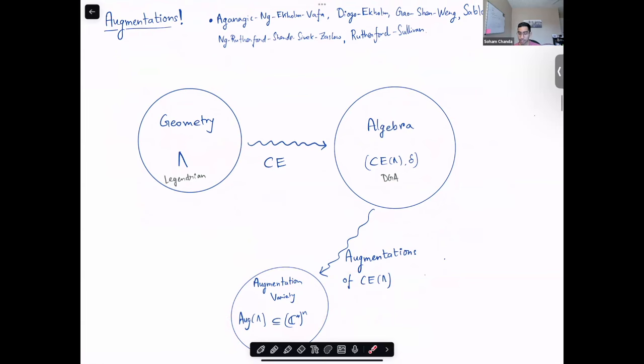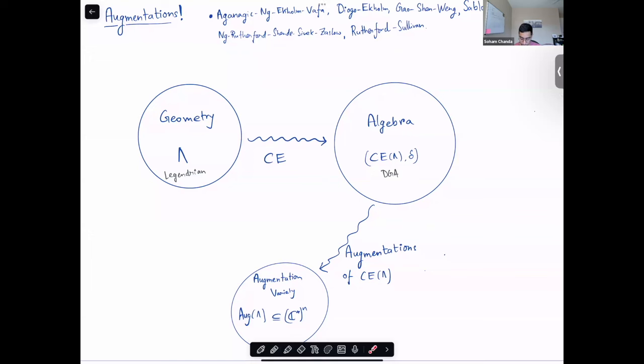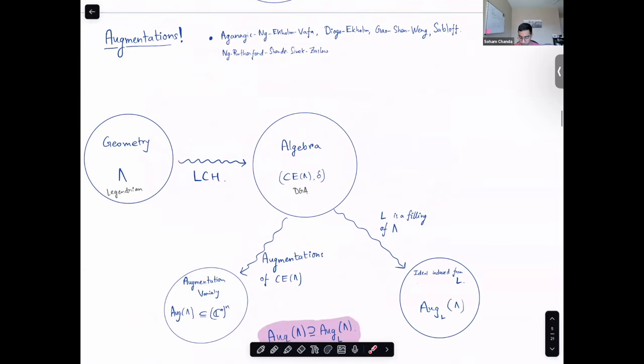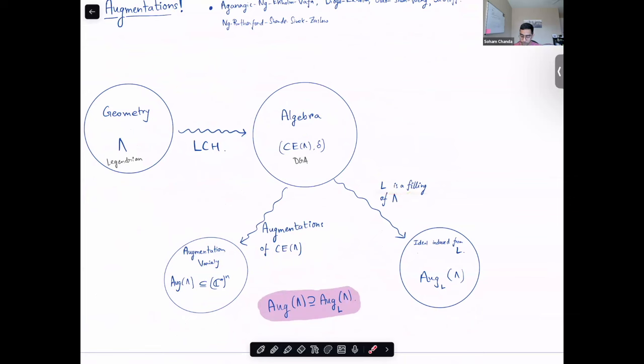Of course, this can come at a cost of losing some information, but since augmentation variety, as the name suggests, comes from augmentations of this DGA, you retain an important information of the geometry of the Legendrian, which is the Lagrangian fillings. Let's say you have a Lagrangian filling L of lambda; that would cut out a specific sub-variety of the augmentation variety. Thus, any filling would induce a sub-variety of the total augmentation variety, which you can use to obstruct certain Lagrangian fillings.